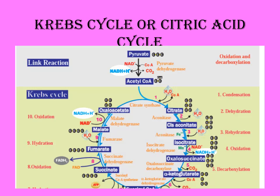This is the final step of the Krebs cycle. To summarize: the first stage is glycolysis, the second is the link reaction, and the third is the citric acid cycle. This is a very important cycle — questions from glycolysis and citric acid cycle are likely to come in exams.